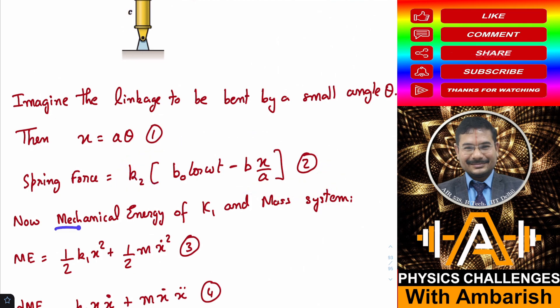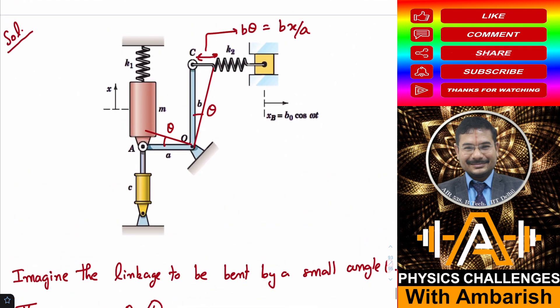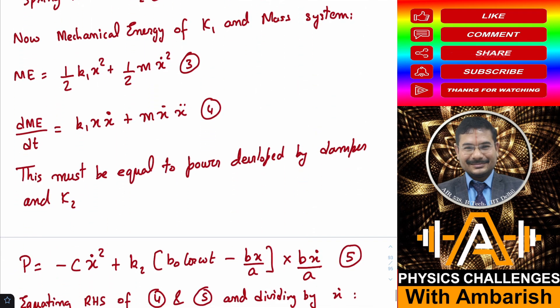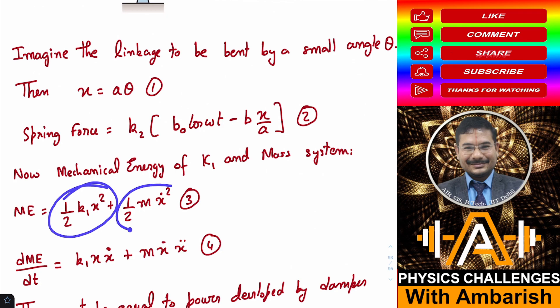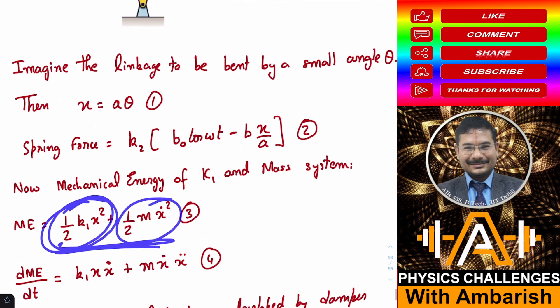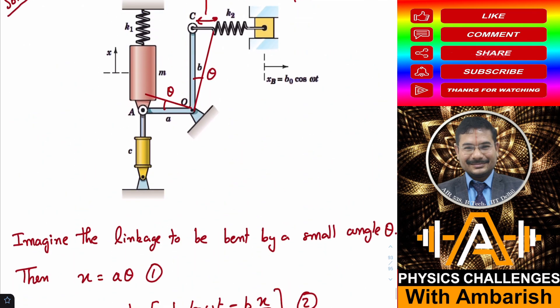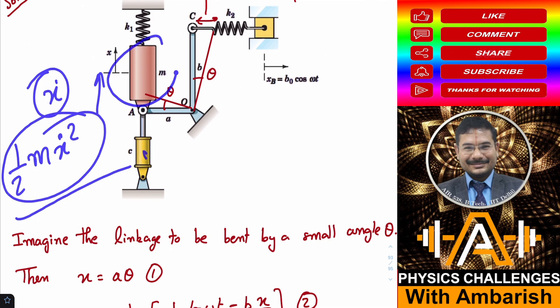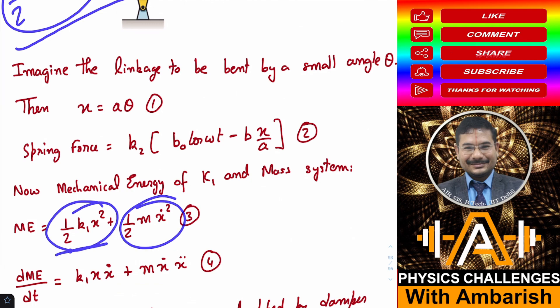What's the mechanical energy of the K1 and the mass system? My system is just this much. All things external to this, or this linkage which is anyway massless, doesn't carry any mechanical energy. I am going to write the mechanical energy of this system and then rate of change of mechanical energy I am going to equate it to the power developed by the K2 spring force as well as power developed by the damper force, which will be C X dot. The mechanical energy is half K1 X squared plus half M X dot squared. This is the spring potential energy in the spring K1, and the kinetic energy of this one is half M X dot squared.